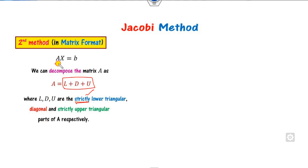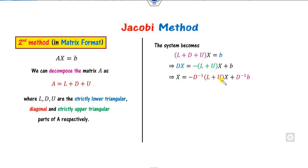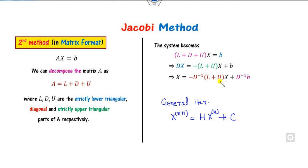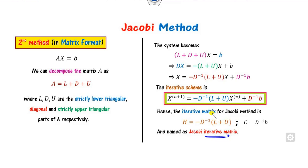Substituting A = D + L + U into AX = B and rearranging, we get DX = -(L+U)X + B. Multiplying both sides by D⁻¹ gives Xₙ₊₁ = -D⁻¹(L+U)Xₙ + D⁻¹B. This is the general iterative formula Xₙ₊₁ = H·Xₙ + C, where H = -D⁻¹(L+U) is the Jacobi iterative matrix and C = D⁻¹B.